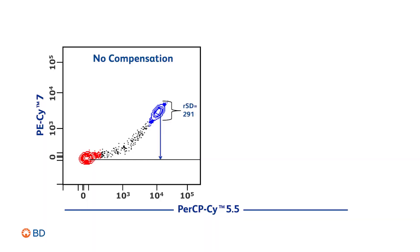Understanding the relationship between fluorescence spillover and spread is important for panel design because spread can significantly impact the resolution of your study. Fluorescence spillover occurs when one fluorochrome emits into a secondary detector. This causes higher background and increased spread, measured as robust standard deviation, in these detectors. In this example, the PerCP Cy5.5 is spilling into the PE Cy7 detector.